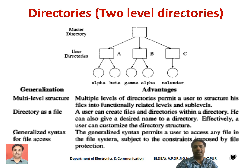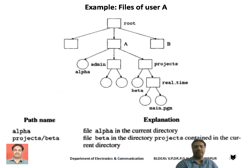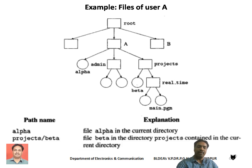We also get generalized syntax for file access. The generalized syntax allows users to access any files in the file system, subject to the constraints imposed by file protection. Here we have a multi-level directory structure example. User A has two subdirectories named admin and projects, and has also created a file alpha within their own directory. To access files, we need to specify the path — the syntax for accessing files.